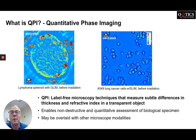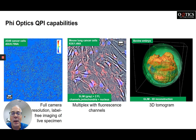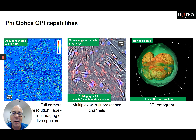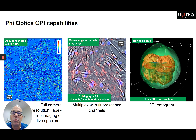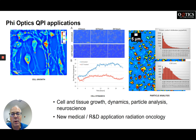PhiOptics QPI gives full camera resolution so we can get a lot of data — we're high throughput in that regard. We can also multiplex with other channels such as fluorescence microscopy, giving you more data about what's going on in real time. There's also the ability to do 3D tomography post-acquisition. Some applications we're known for include cell growth, cell dynamics, particle analysis, and neuroscience.